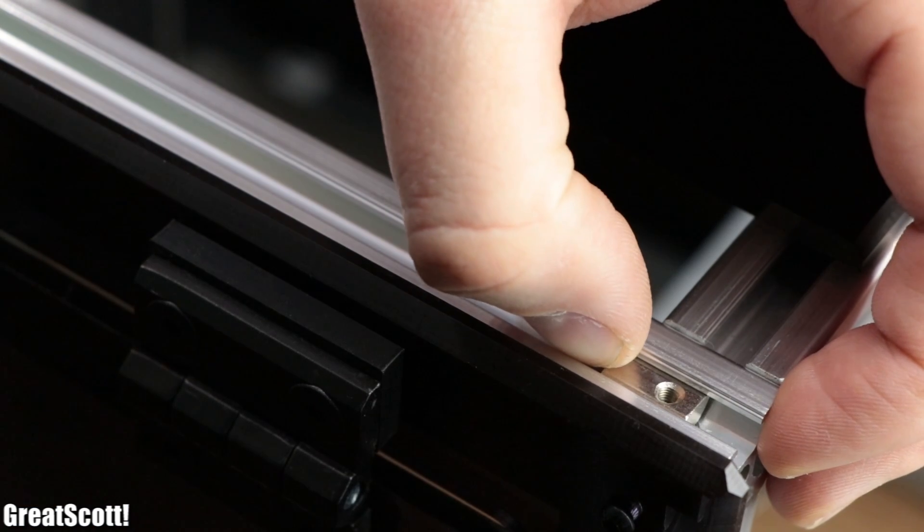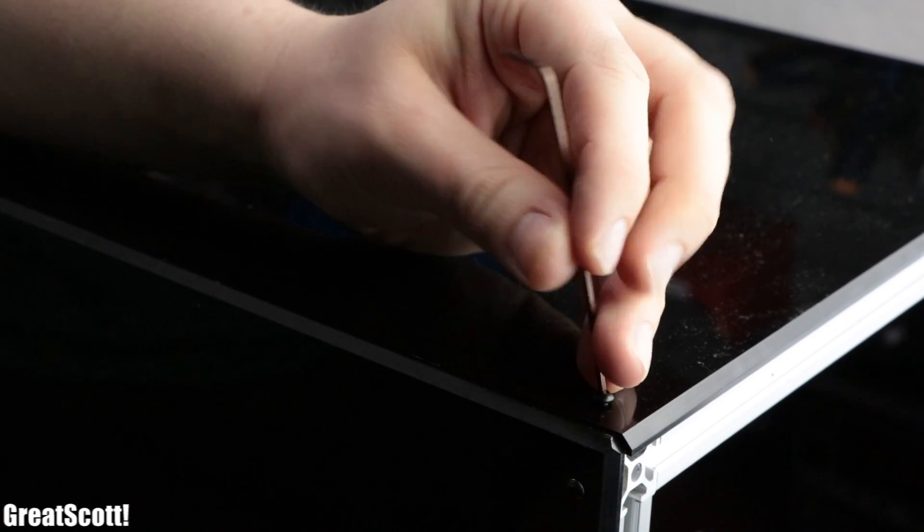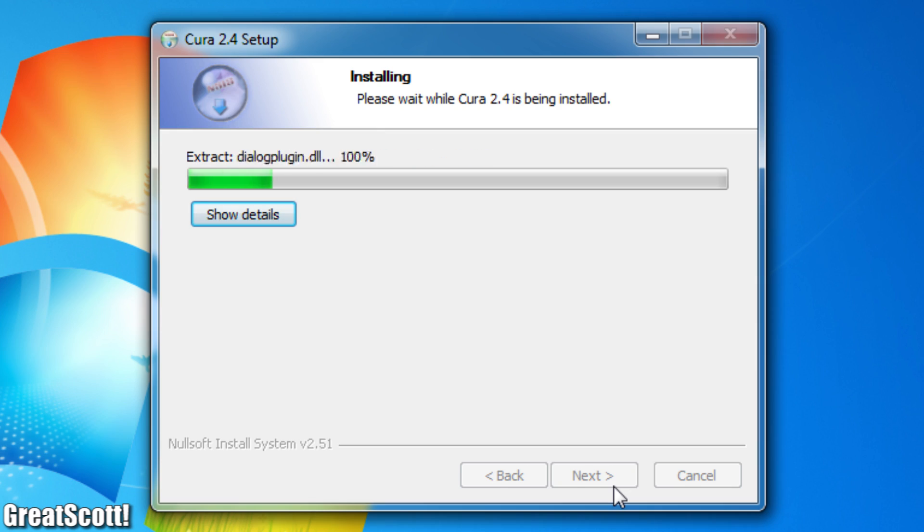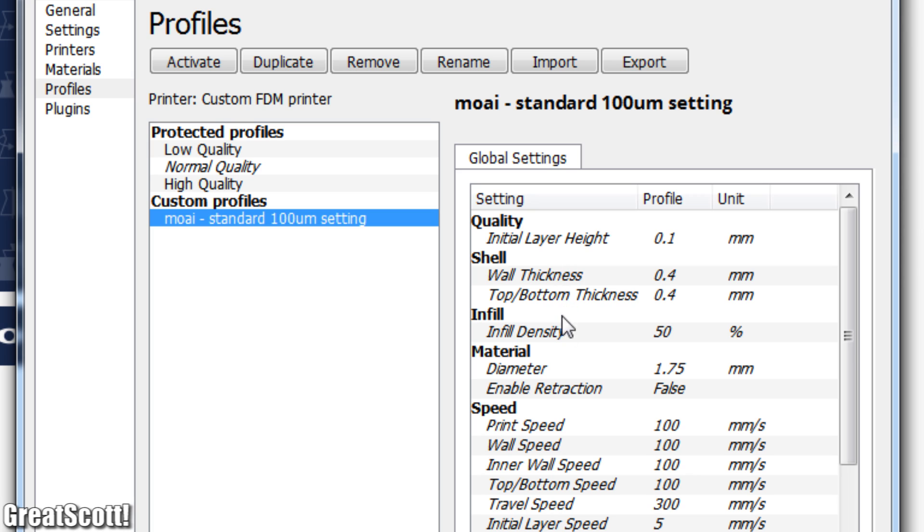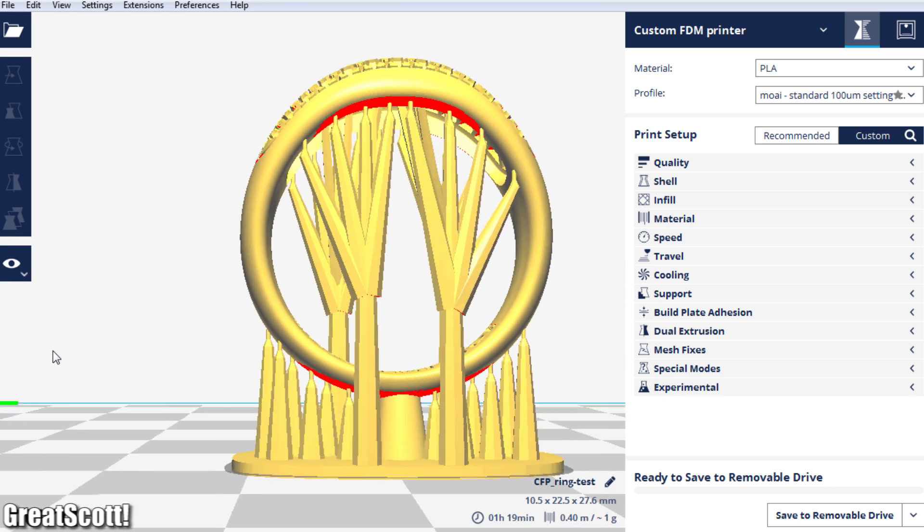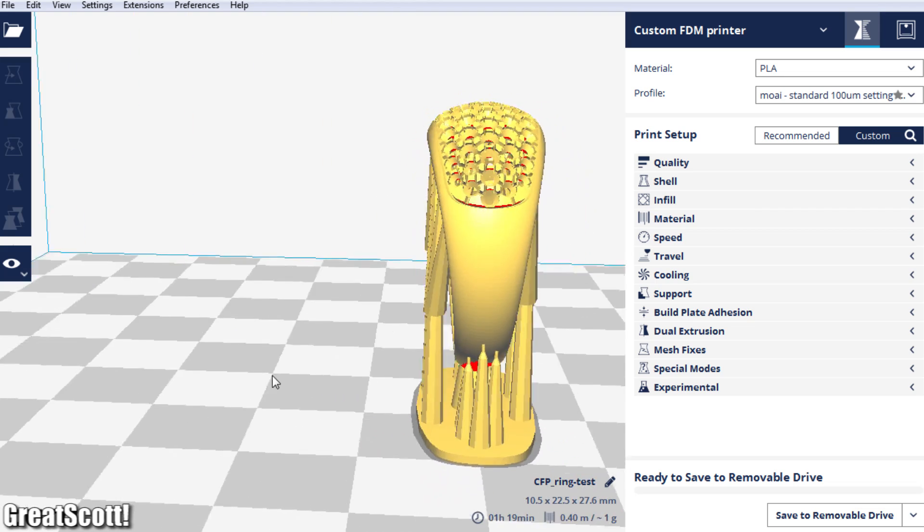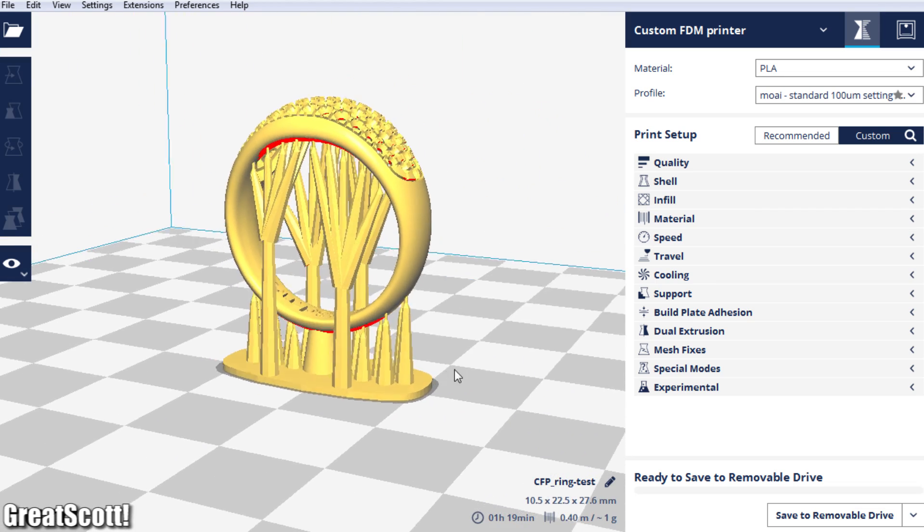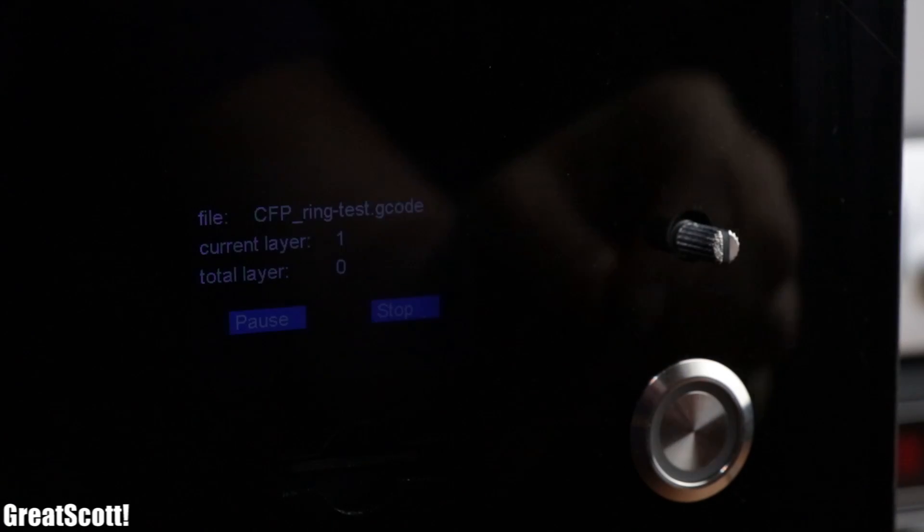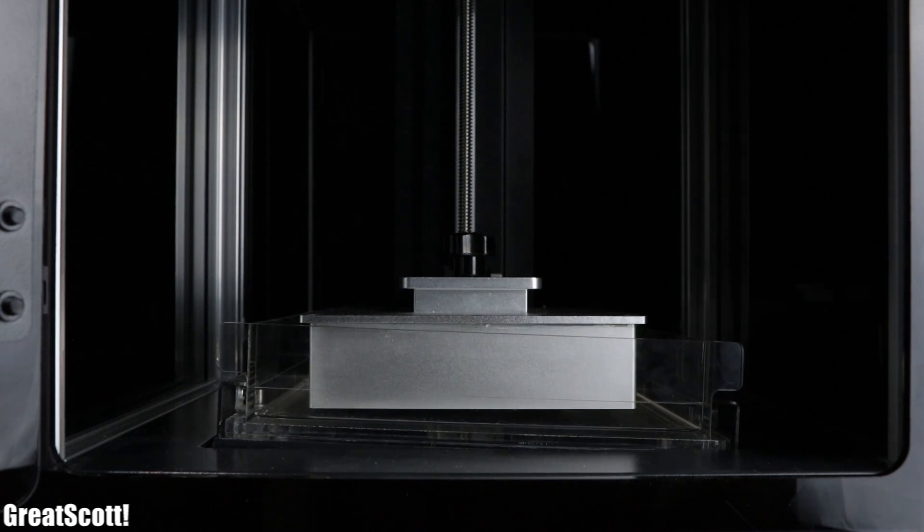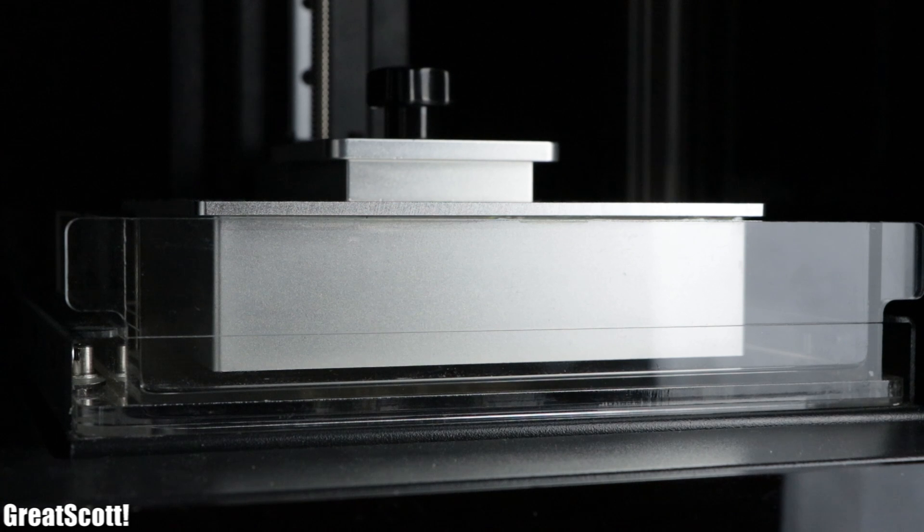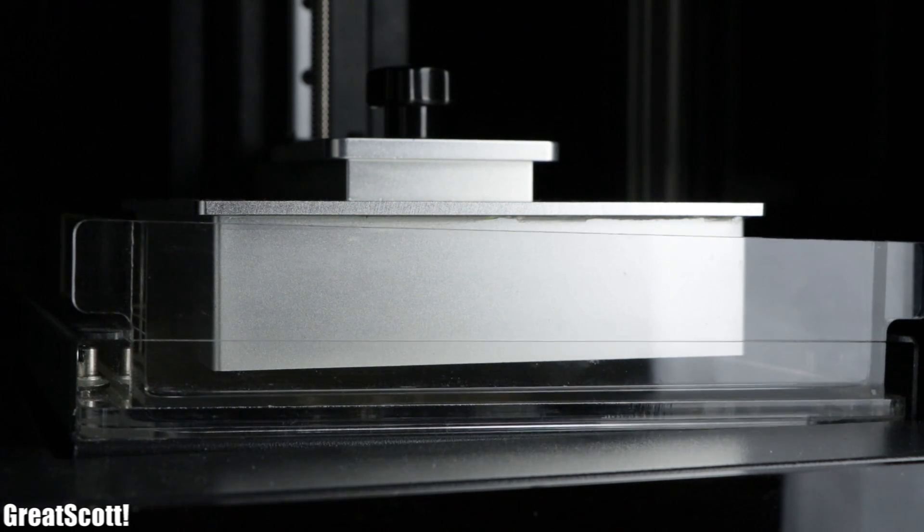And it was time to attach the remaining two side covers and install the QR software. There I entered the machine settings provided by the manufacturer and imported the Moai printing profile. After importing the ring test STL file, I saved its sliced GCODE to the SD card and started the first test print with it. As you can see, it was a dry print, meaning without the resin, in order to see whether the printer moves like it's supposed to.